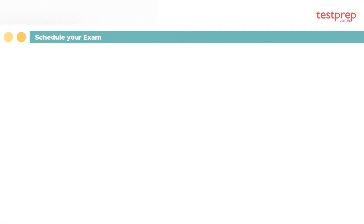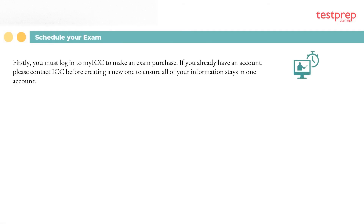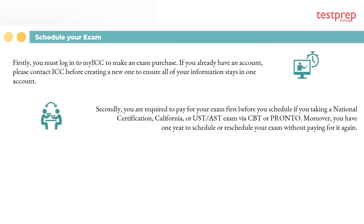To schedule your exam: first, log in to My ICC to make an exam purchase. If you already have an account, contact ICC before creating a new one to ensure all your information stays in one account. Second, you are required to pay for your exam before you schedule, if you are taking a national certification, California, or UST ASD exam via CBT or Pronto.